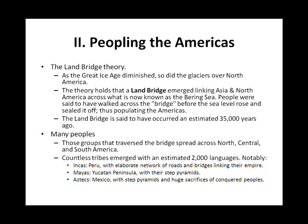Many Peoples: Those groups that traversed the bridge spread across North, Central, and South America. Countless tribes emerged with an estimated 2,000 languages — notably the Incas of Peru, with elaborate networks of roads and bridges linking their empire; the Mayans of the Yucatan Peninsula, with their steppe pyramids; and the Aztecs of Mexico, with steppe pyramids and huge sacrifices of conquered peoples.